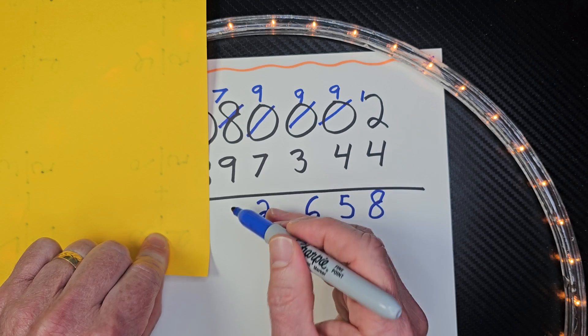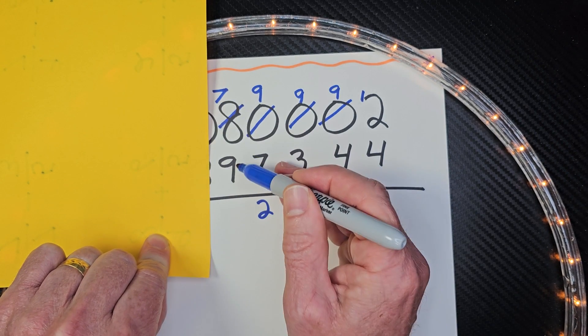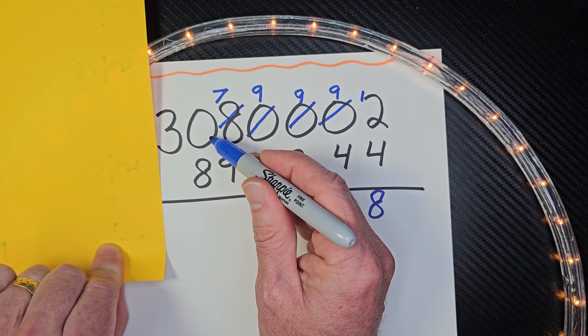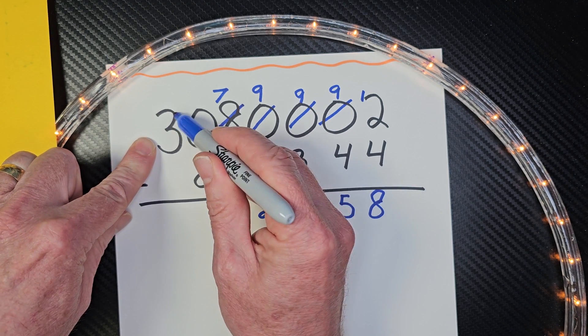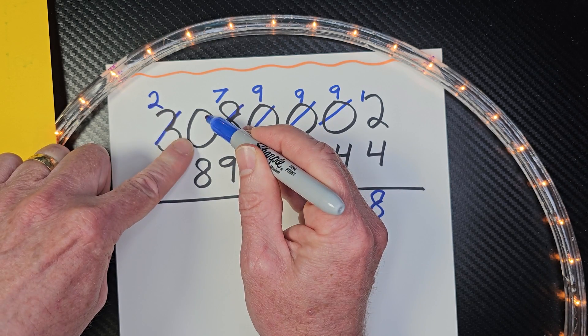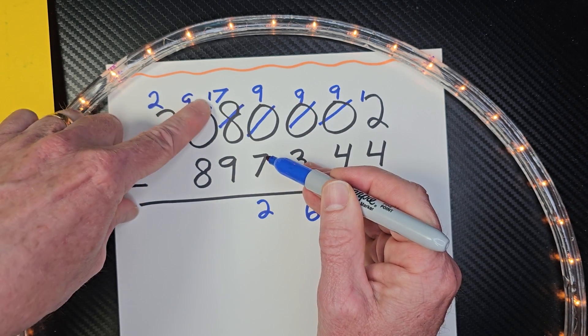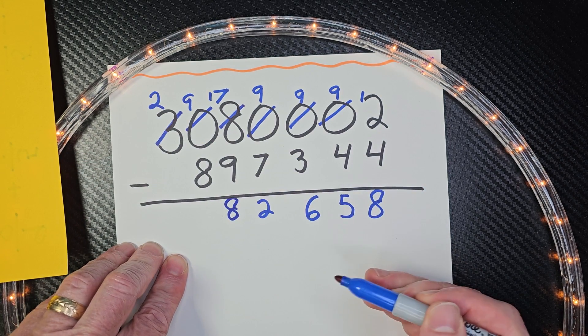And then 7 minus 9 would be... you remember it's 7 take away 9. Again, we need to go next door. No more cookies here. We got to borrow from the last number. All right. So let's take one away from that 3, and that'll be a 2. This right here will turn into a 9. And then we have 17. 17 minus 9, what'd you get? 8. So we put an 8 right there.